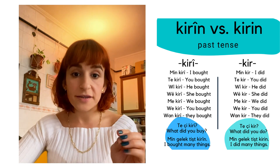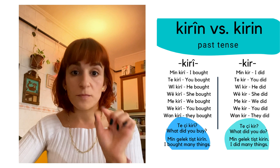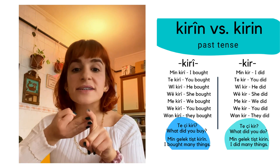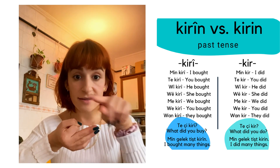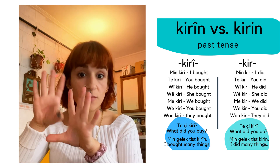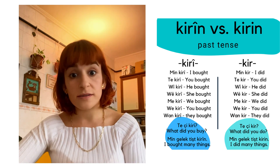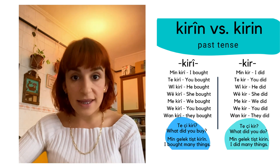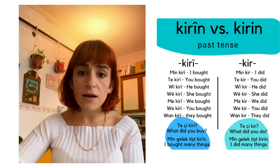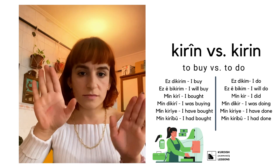In the past tense, Kurdish has ergativity, which means we conjugate the verb according to the object. If you want to say 'I bought many things,' you say 'min galak tisht kareem' — the final 'n' reflects the number of the object (many things). But 'I did many things' is 'min galak tisht karen.'